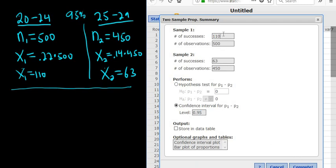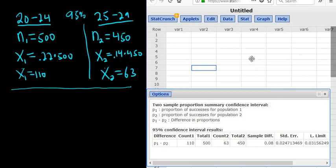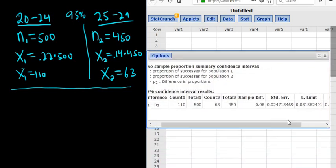Everything looks good. Let me just double check. So 110, 500, 63, 450. Confidence level is good to go. Click Compute. And there it is. There's our confidence interval.